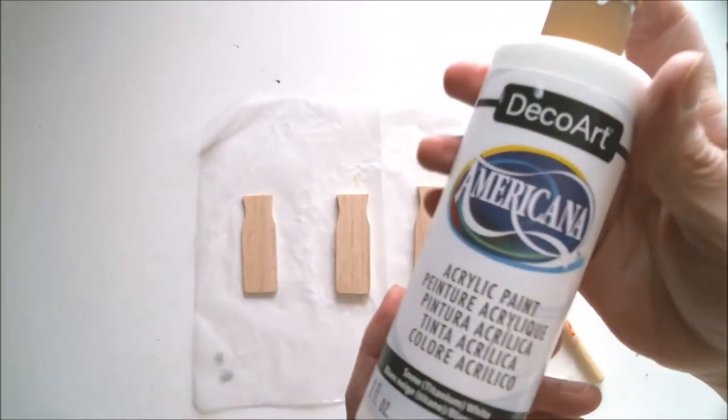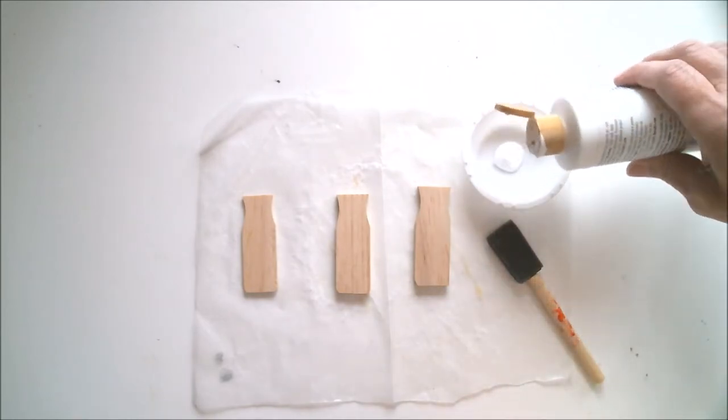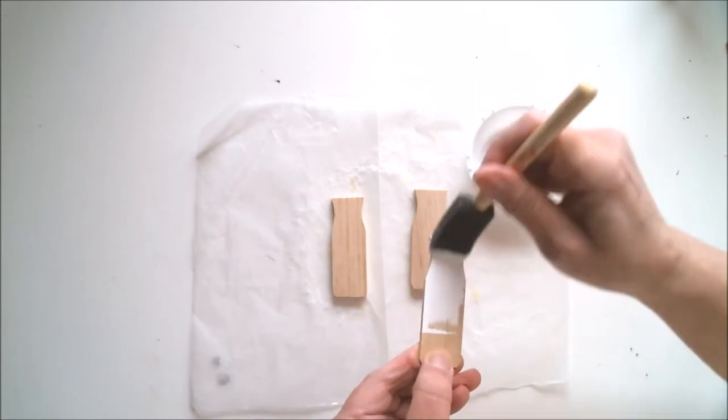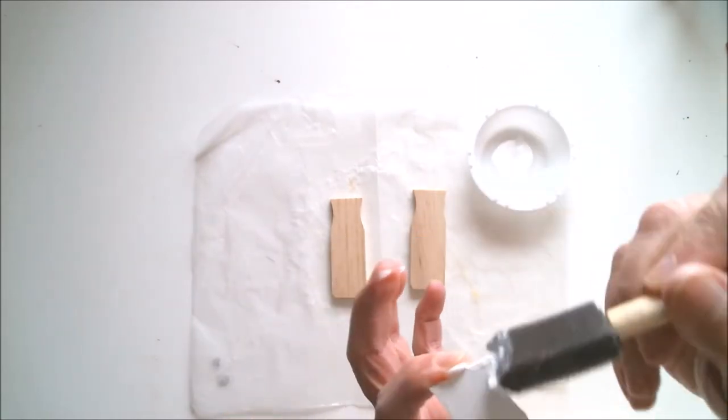Next, I'm going to paint the rest of them with white acrylic paint. I actually ended up painting four of them. I painted the front and the sides, but I didn't paint the back because it's not going to be seen, but you could always paint the back if you wanted to.